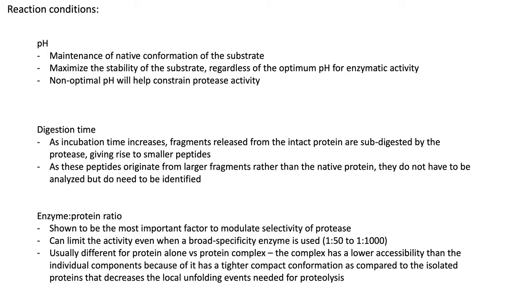The enzyme to protein ratio is very critical — some people think it's the most important factor to modulate the selectivity of the protease. One can limit the activity even when a broad specificity enzyme is used by changing just the ratio of enzyme to protein. Usually the amount of enzyme you want to use will be different for a protein alone versus a protein complex, because the complex itself has lower accessibility than the individual components due to its tighter, more compact conformation. So you may need to optimize the amount of enzyme across different experimental conditions.